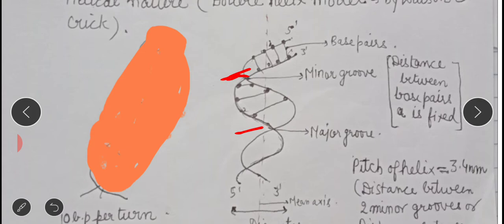We call these indentations grooves. Where there is a major gap between one turn and the next turn, that is known as a major groove.